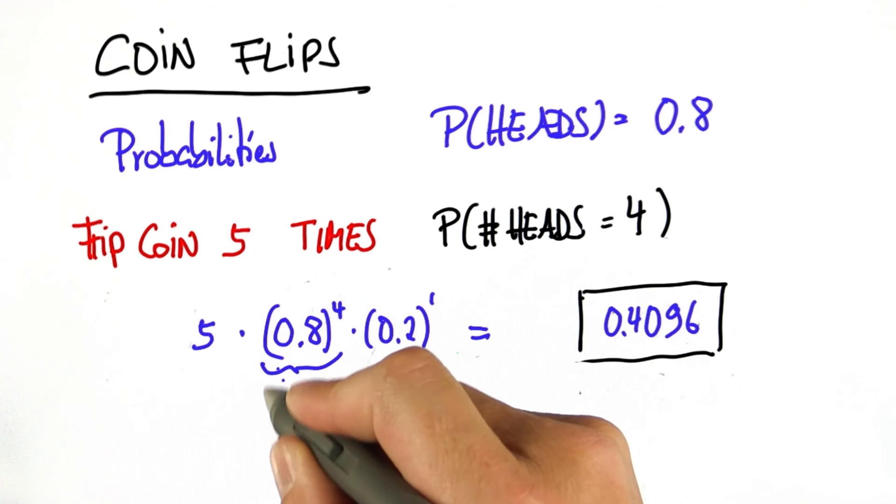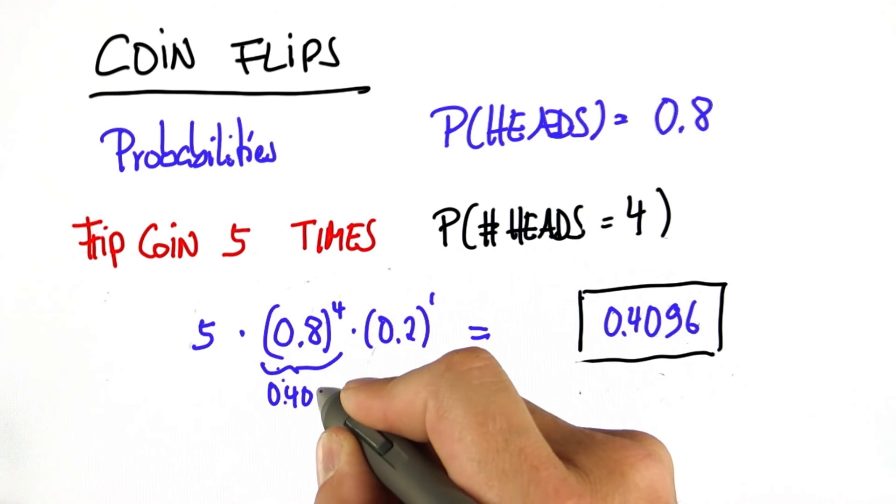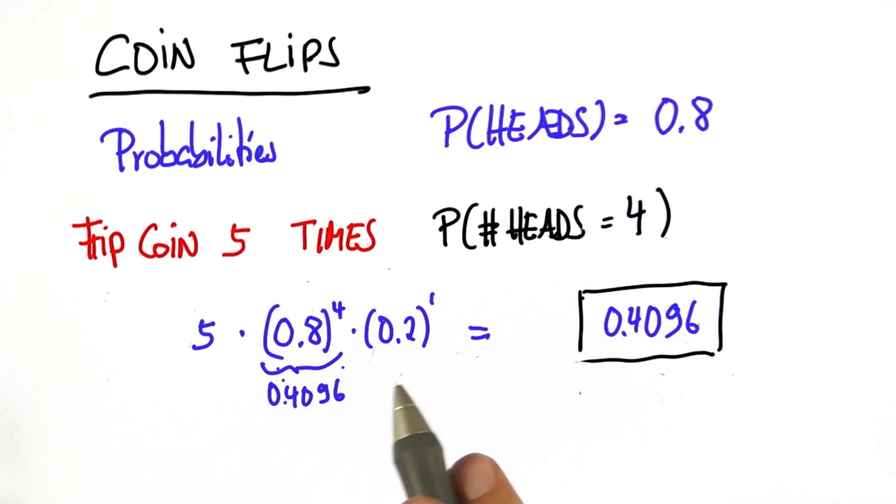This over here is indeed 0.4096. And the 5 times 0.2 cancels each other out. So that's the result in this specific case. That cancellation doesn't always happen. It's a rare circumstance.